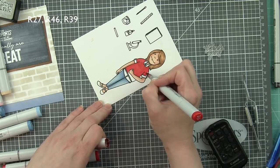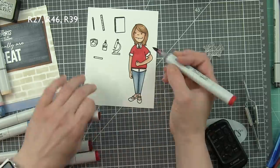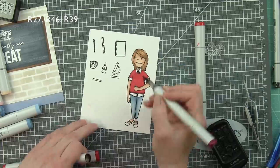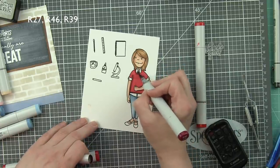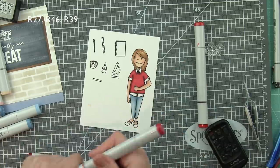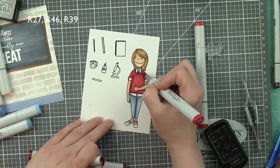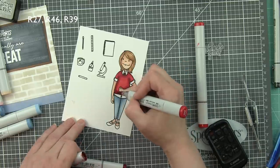So R27, 46, and 39 are the colors I used for her little sweater. Adding in my darker colors where it naturally will be darker. And then we'll go in with the mid-tone, blend out that dark a little bit, and go back with our lightest R27, and blend it out even more.